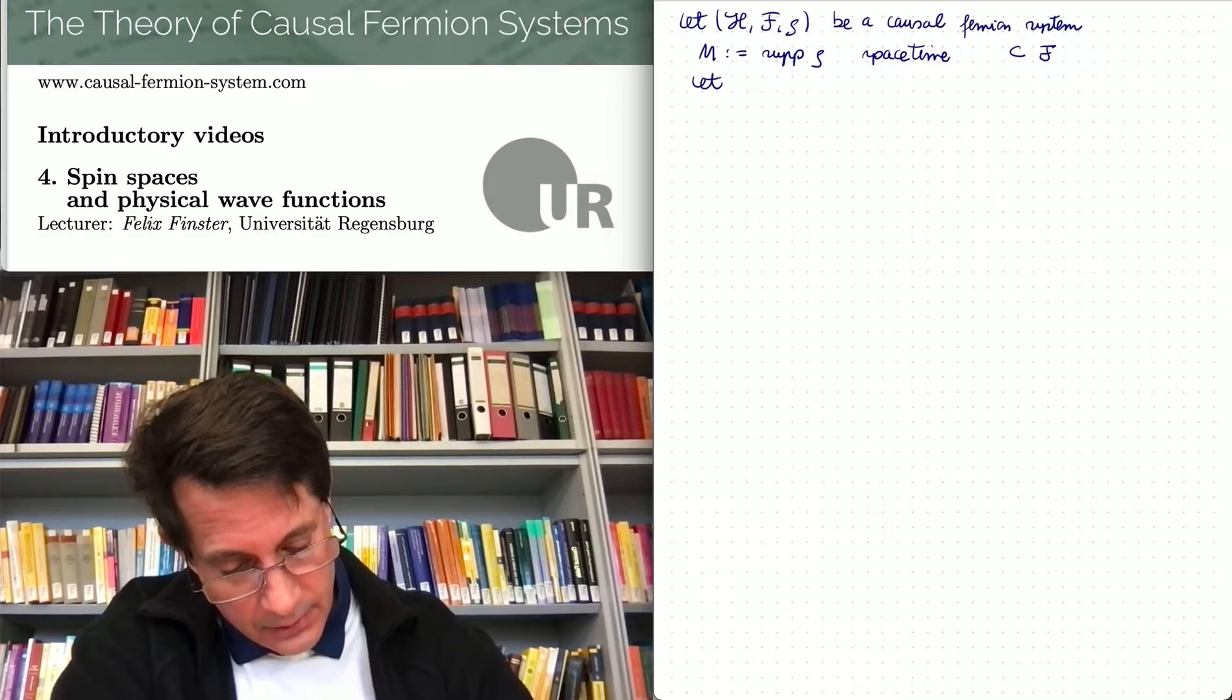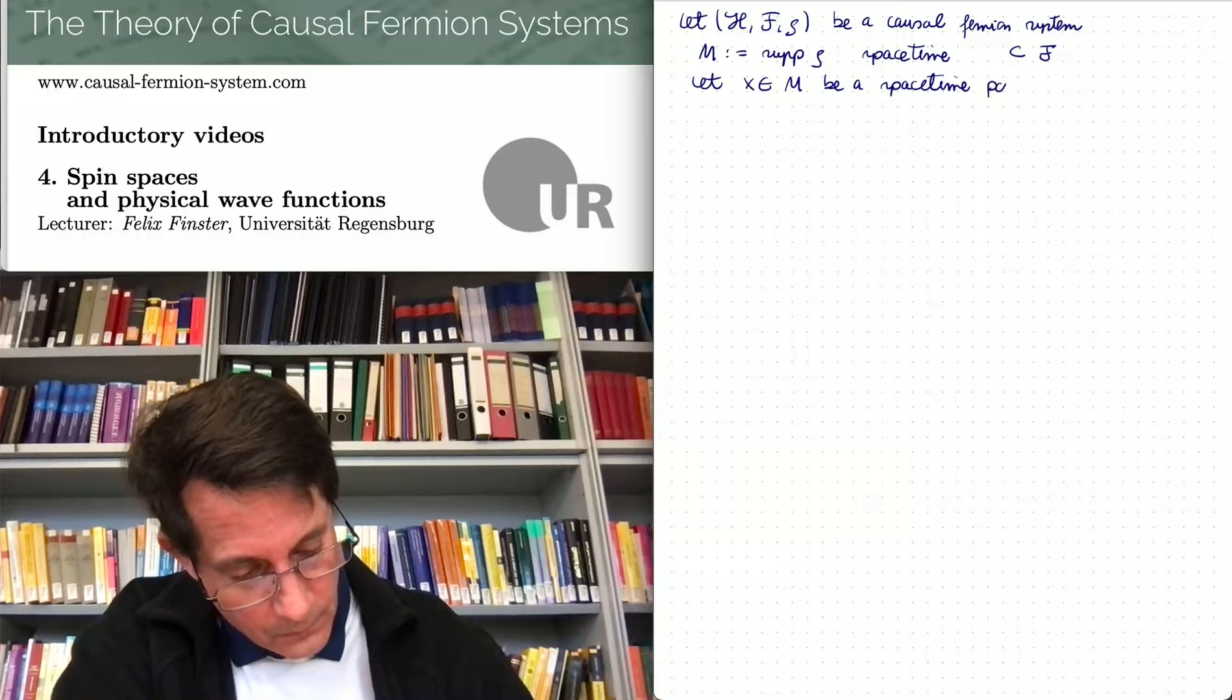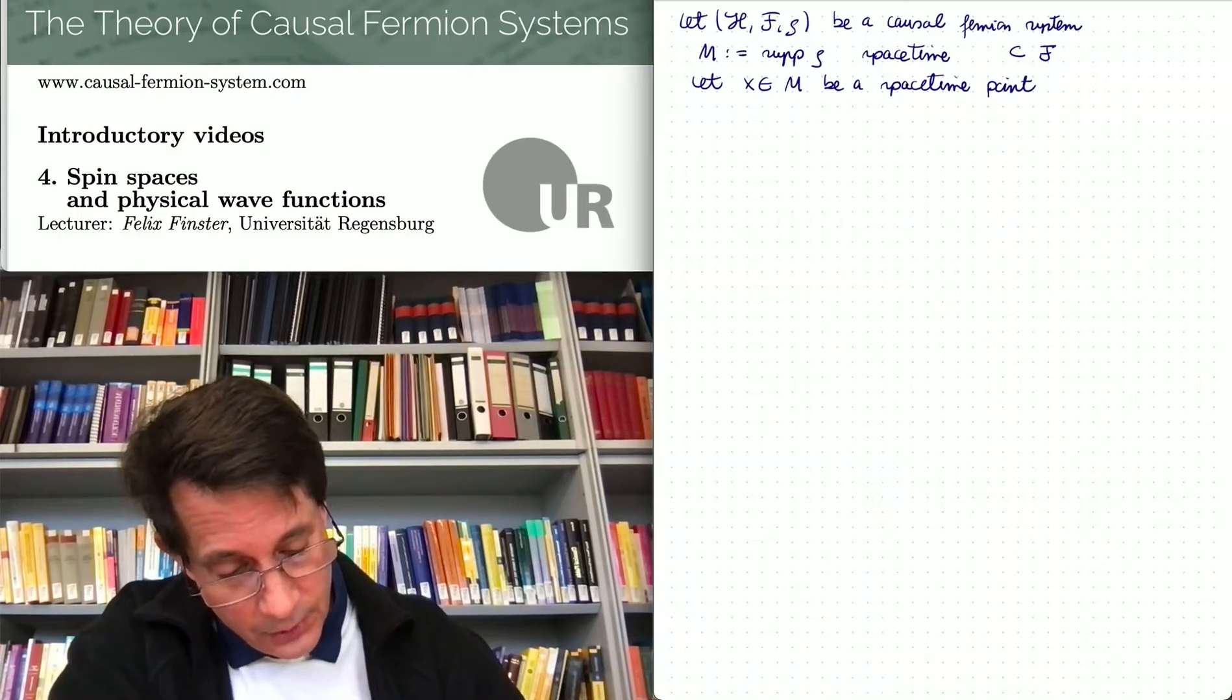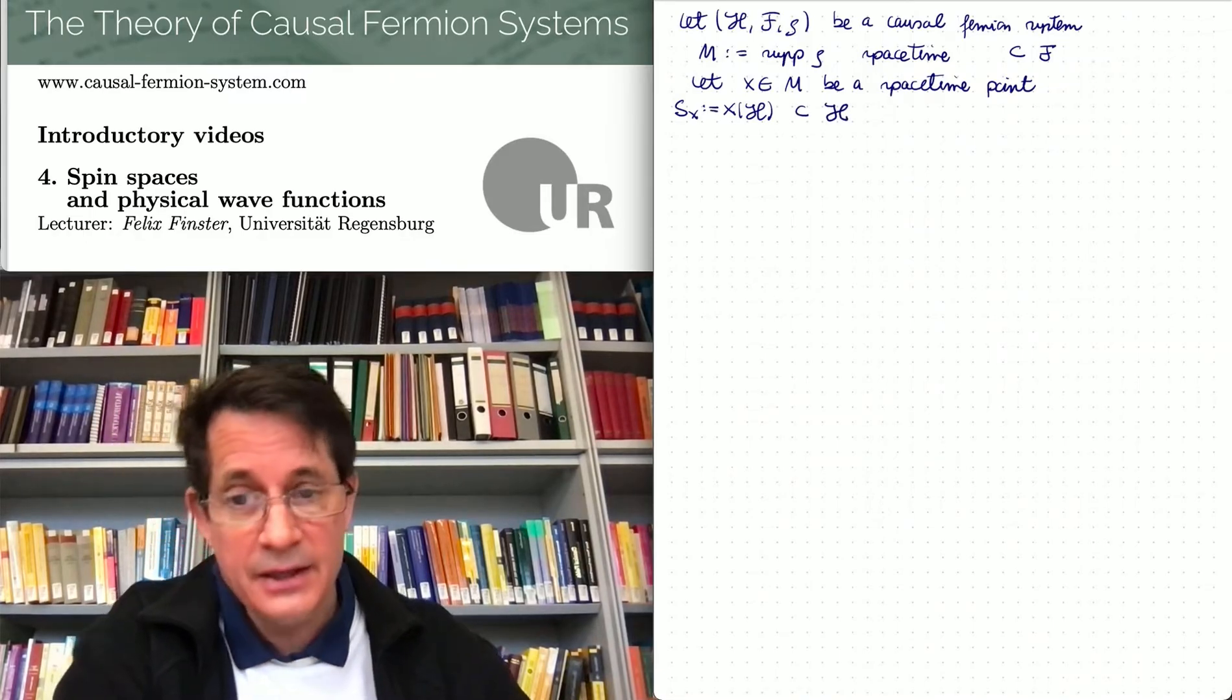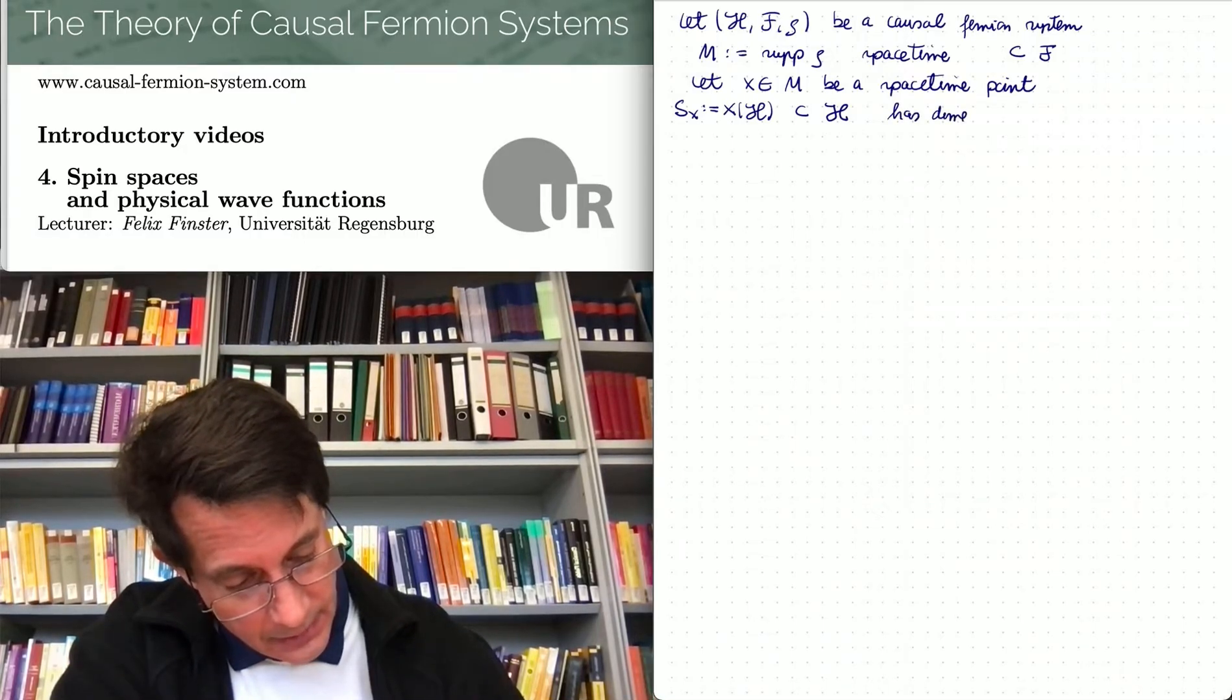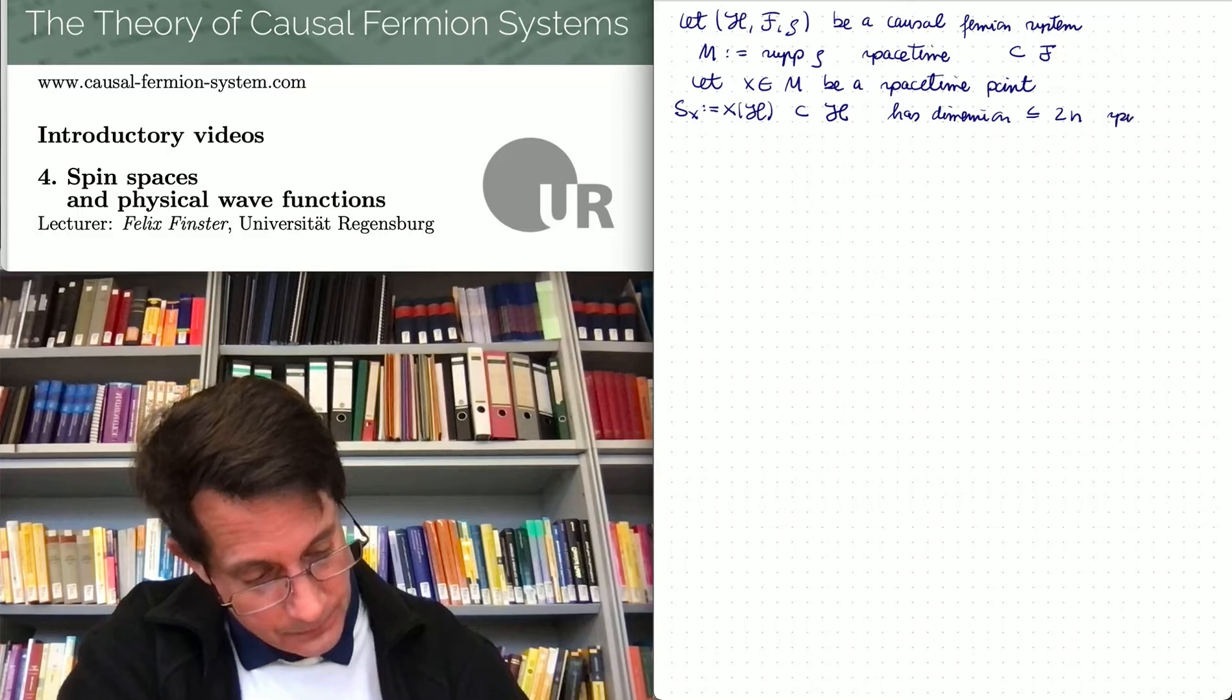So what can we do next? Suppose we take a space-time point x in M. This is a linear operator of rank at most 2n. What we do is consider its image, x of H, which we denote by Sx. This is a subspace of the Hilbert space of dimension at most 2n, and this space is called the spin space.